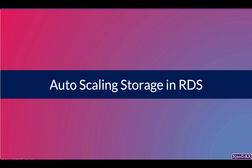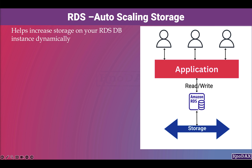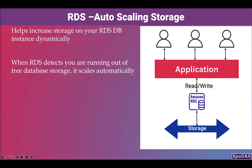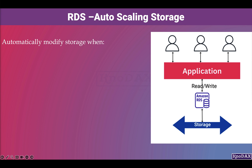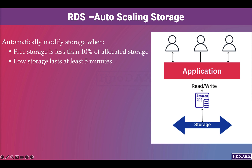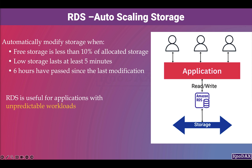RDS provides auto-scaling storage features, enabling an automatic increase in storage if your RDS database is running low on free storage space. When RDS detects you are running out of free database storage, it scales automatically, avoiding the need to manually scale. You need to set a maximum storage threshold — the maximum size you allow for your DB storage. RDS automatically modifies storage when free storage is less than 10% of allocated storage and the low storage condition has lasted at least 5 minutes, or 6 hours have passed since the last modification. These storage features make RDS useful for applications with unpredictable workloads.